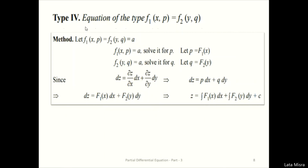Standard Form 4 involves x, p, y, and q as the function f(x, p) = g(y, q). We separate p and x from y and q, rewriting as f₁(x, p) = f₂(y, q) = a (a constant). From f₁(x, p) = a we find p as a function of x, and from f₂(y, q) = a we find q as a function of y. We substitute into dz = p dx + q dy and integrate to get the solution.